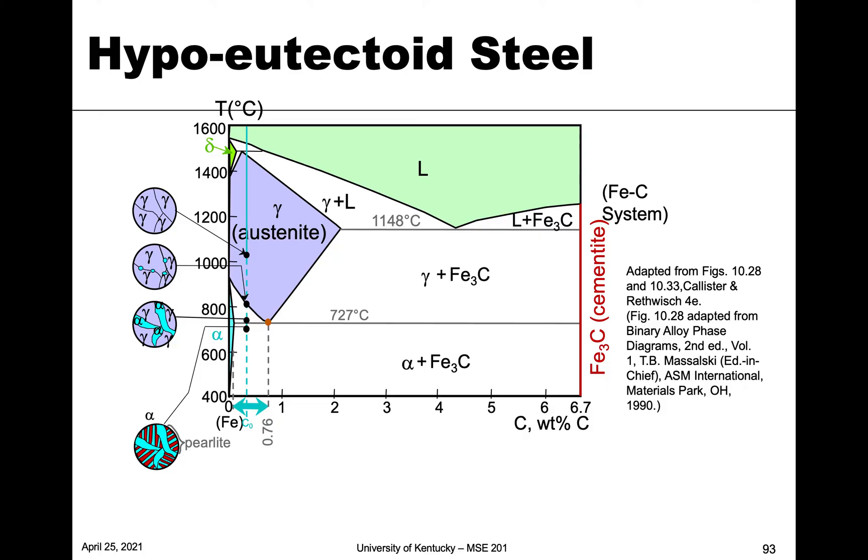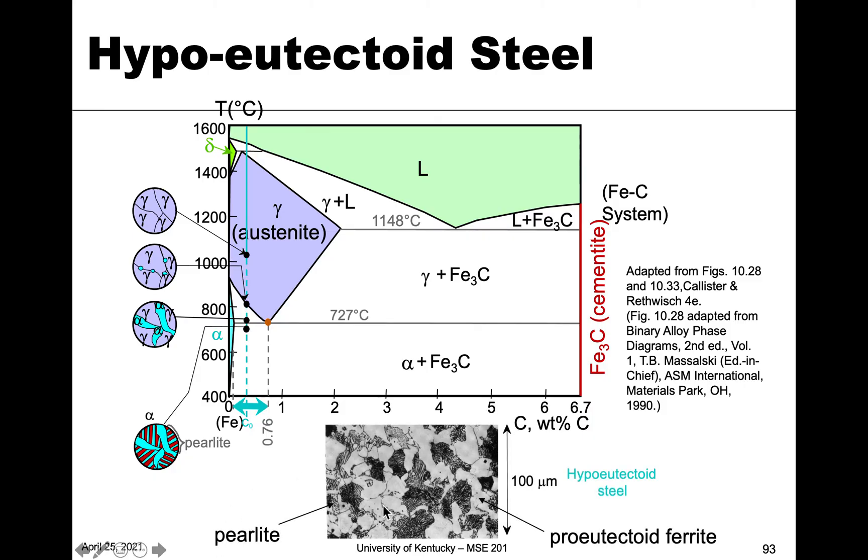So this is an example of hypo eutectoid. We're going to have perlite. So it would be 100% perlite if we were just at 0.76, but we're below this. And so we pick up some alpha or ferrite before the eutectoid temperature. And so that's what this kind of blue region is here. And so if you want to see what this looks might look like in a real system, this is a hypo eutectoid steel.